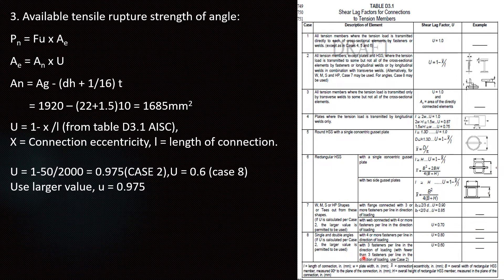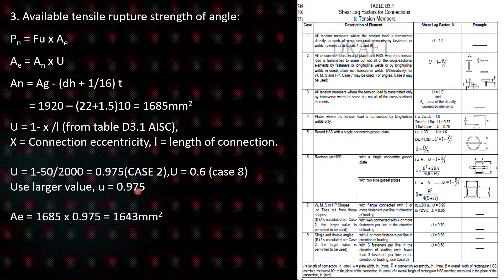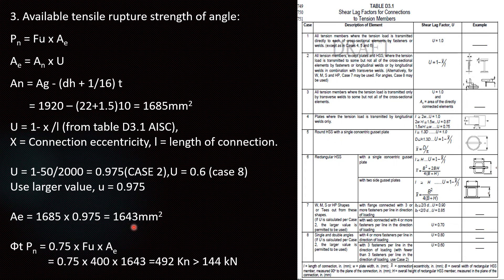For case 8 if I am assuming that bolt is less than 3, U value is 0.6. We have to use larger value hence U is equal to 0.975. Then we can find out Ae is equal to An into U. So 1685 into 0.975 equals 1643 mm square. Then available design tensile rupture strength is equal to 0.75 into Fu into Ae. We are getting 492 kN which is greater than 144 kN.